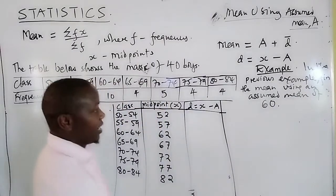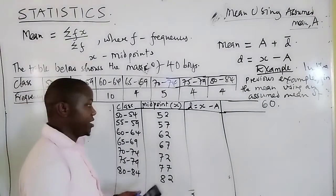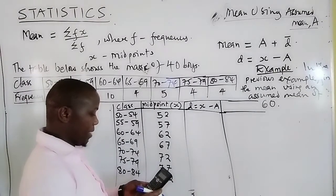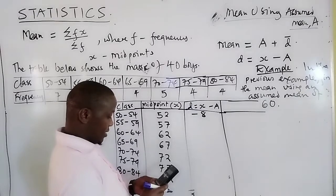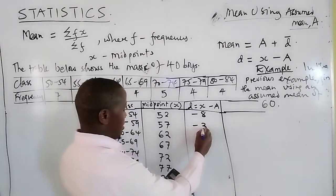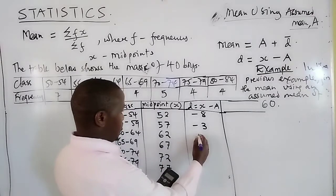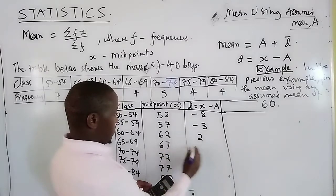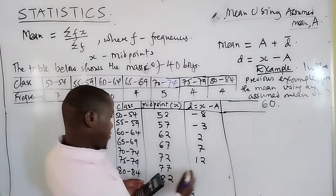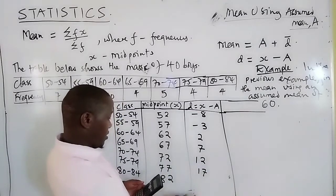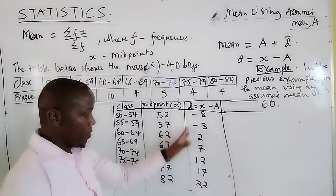We calculate how the midpoints vary from the assumed mean: 52 minus 60 gives negative 8; 57 minus 60 gives negative 3; 62 minus 60 gives 2; then 7, 12, 17, and 22 for the remaining classes. These are the d values — the deviations of each midpoint from the assumed mean of 60.